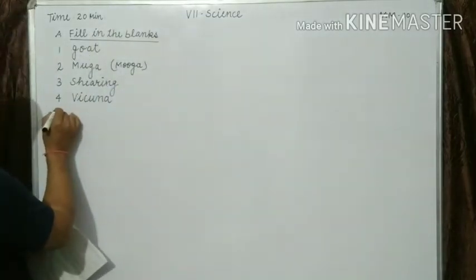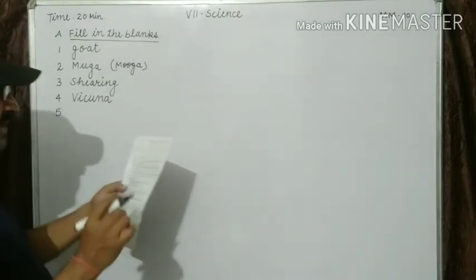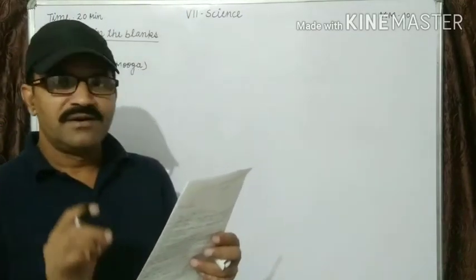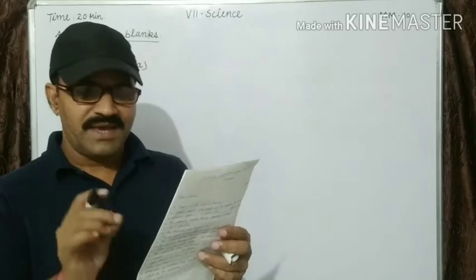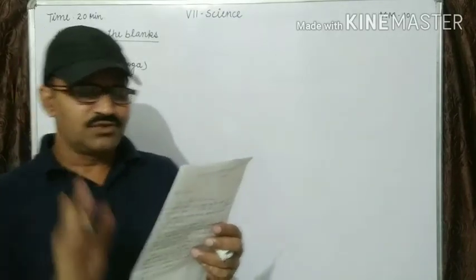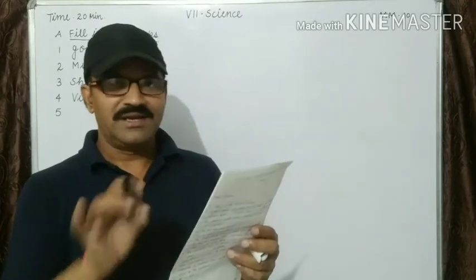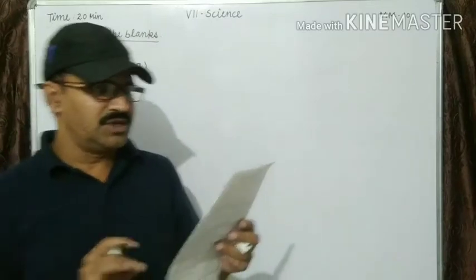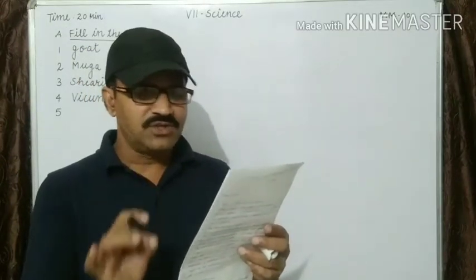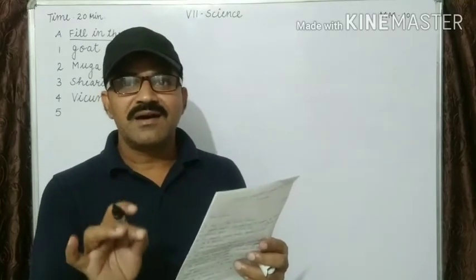Question number five: silk from which the natural gum has not been removed is dash silk. We cannot remove natural gum from that silk — it is known as raw silk. Answer is raw silk.